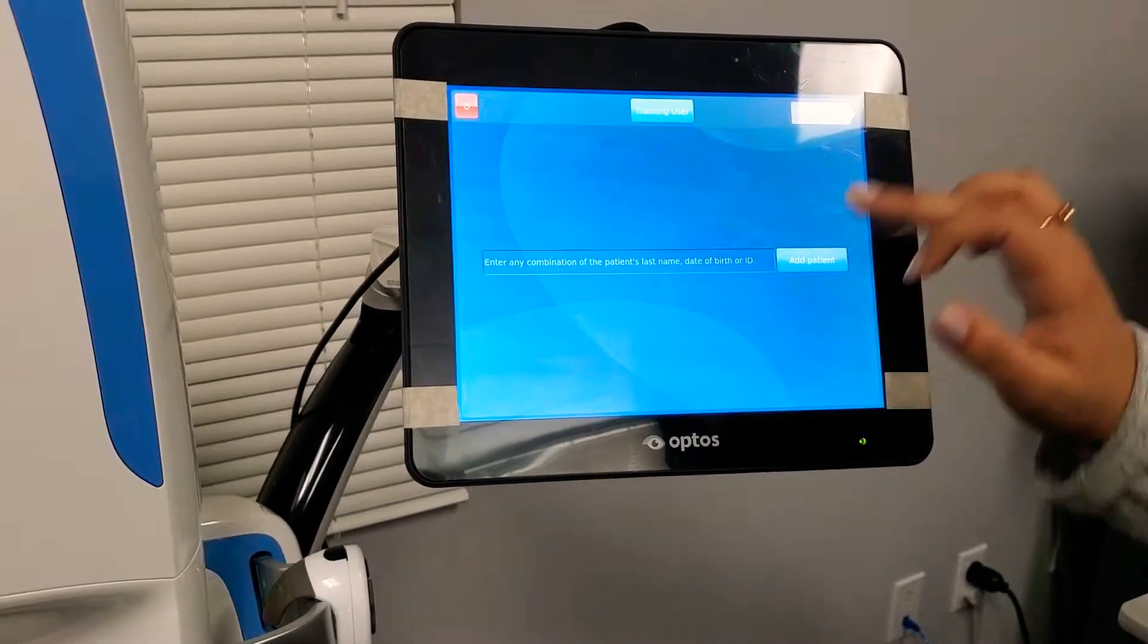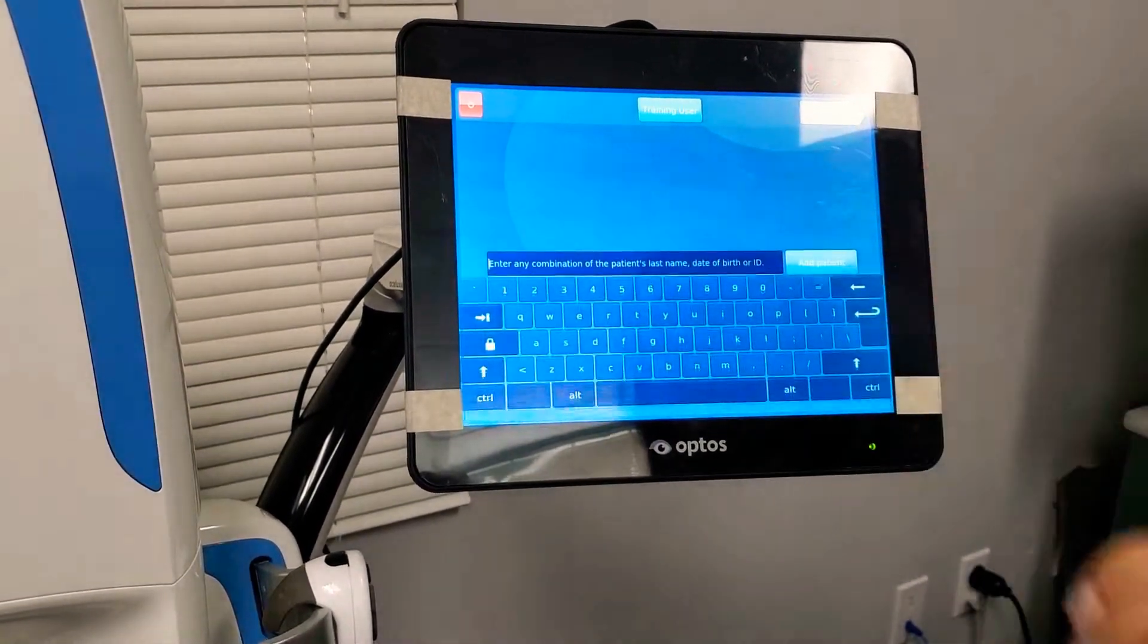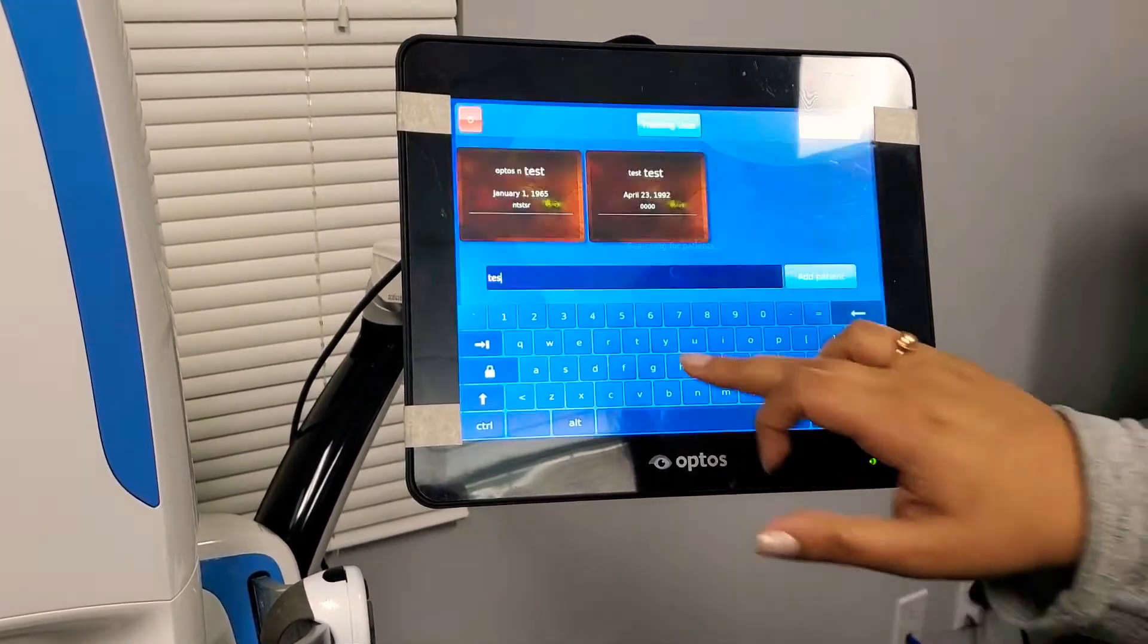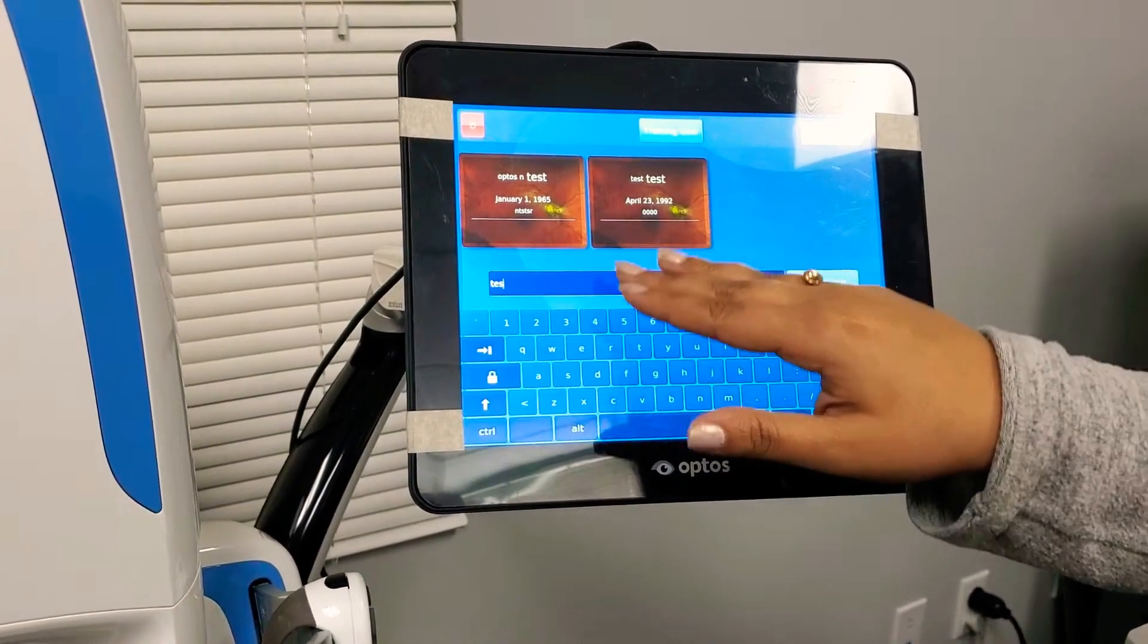To begin starting Optos, we go ahead and add the patient to generate a patient who's already been here. You just begin to type their name. So I'm doing tests and it generates anybody who's test.